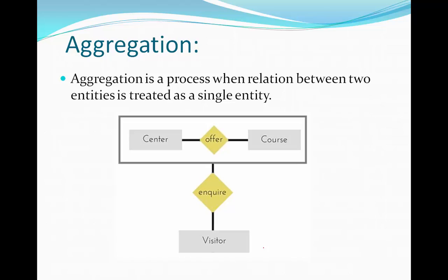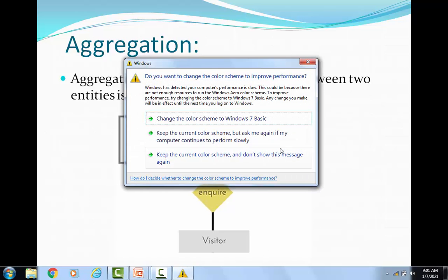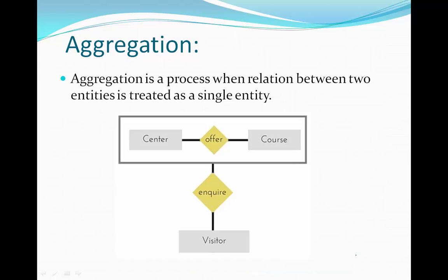The next concept is aggregation. In aggregation, a relationship between two entities is treated as a single entity. It is not normally possible to establish a relationship among relationships directly. So the relationship between two entities is combined and treated as a single entity, allowing us to establish a relationship with that combined entity. This process is called aggregation.